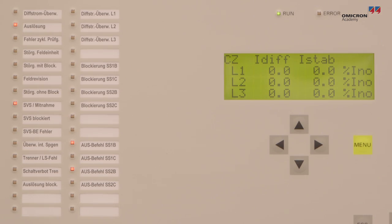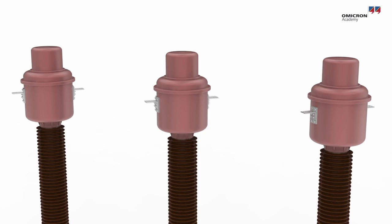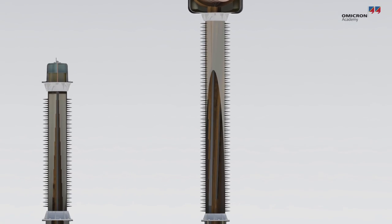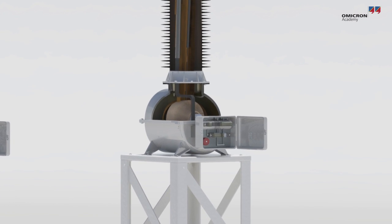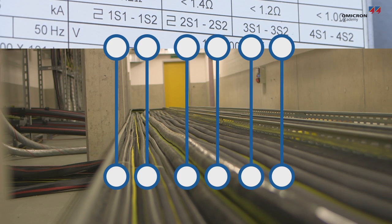Polarity faults can lead to a protection system malfunction. There can be many reasons for improper polarity: the CT might have been installed with the wrong mechanical orientation, a CT could have an internal wiring error, or a single instrument transformer's secondary wires may have been crossed somewhere along the way to the secondary system.